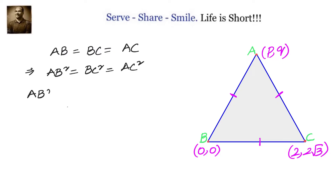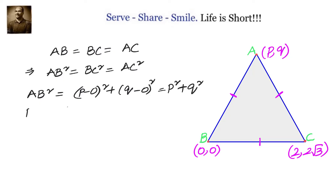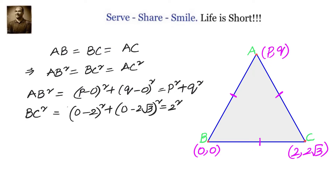AB square is (P minus 0) whole square plus (Q minus 0) whole square, which equals P square plus Q square, using the distance between two points formula. BC square is (0 minus 2) whole square plus (0 minus 2 root 3) whole square, which equals 2 square plus (2 root 3) whole square. That gives 4 plus 12, so BC square equals 16.